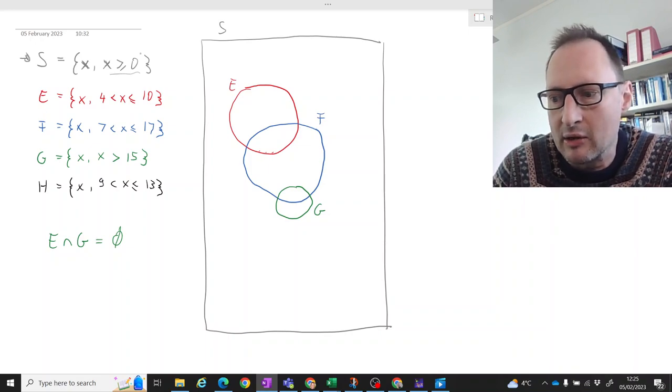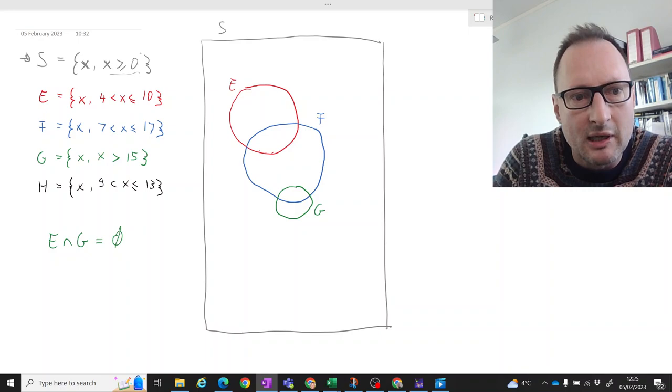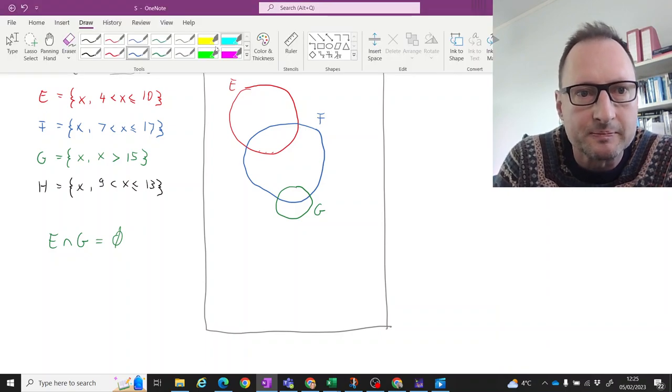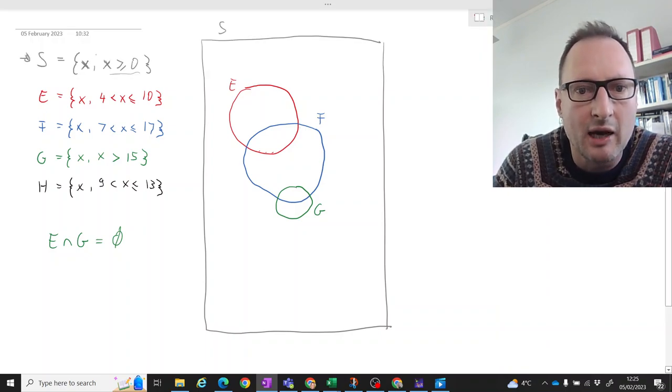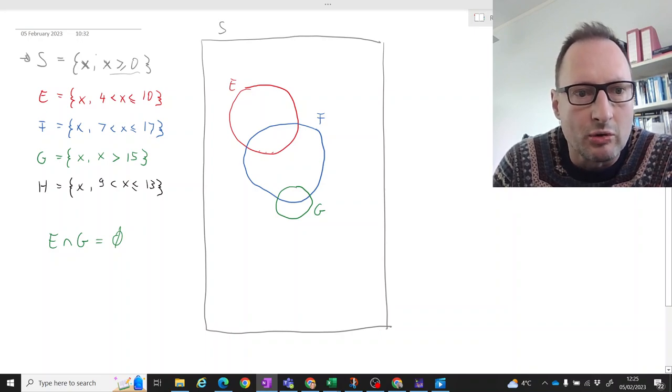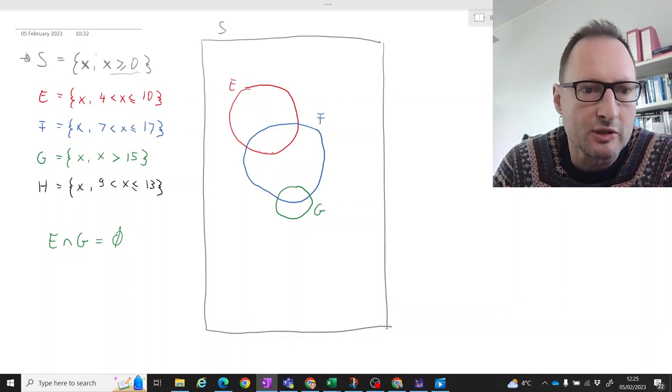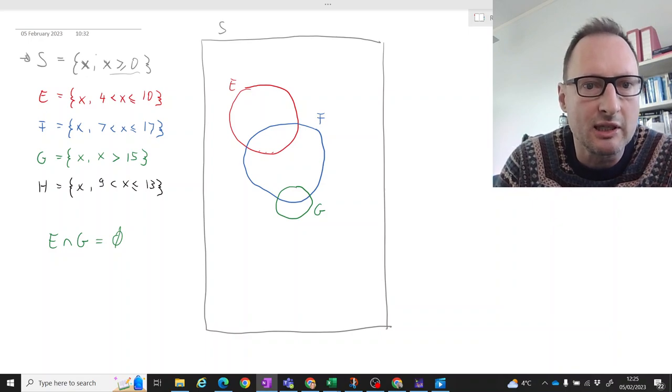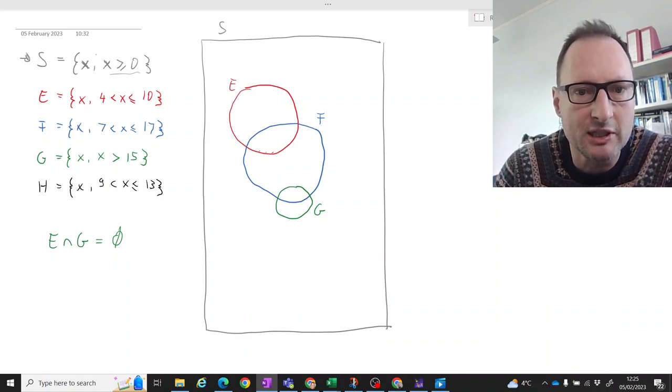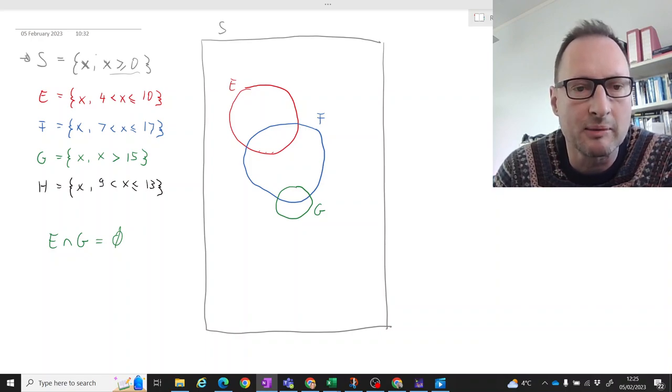And now let's also think about, lastly, event H, which is in black. How would we draw this? So H has an intersection with E, because for instance, 9.5 is both in H and in E. So we have an intersection here. H does not have an intersection with G, because H only goes up to 13 and G is only numbers larger than 15.